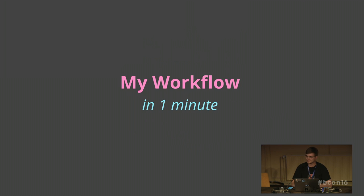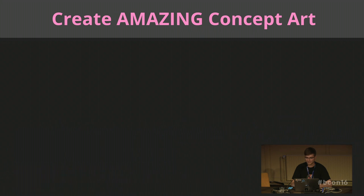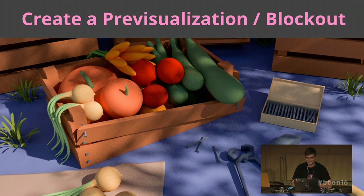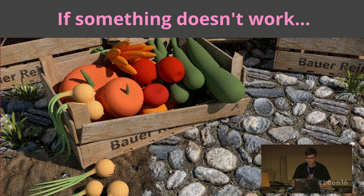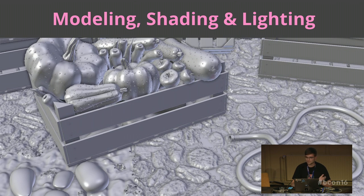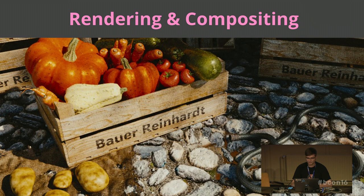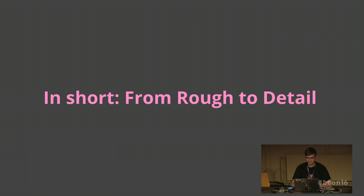My workflow in about one minute: first I find a good idea, then I create an amazing concept art and a pre-visualization — also known as a block out — where I block out my scene with very simple shapes and colors. Then step by step I replace these with high resolution objects. Sometimes things don't work and you realize it a bit later, so you try new things. Then do the modeling, shading, lighting, rendering, compositing, and finally ask for feedback and fine tune the image. Overall: from rough to detail.